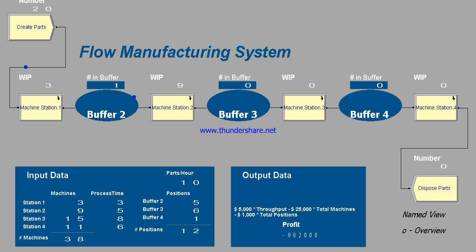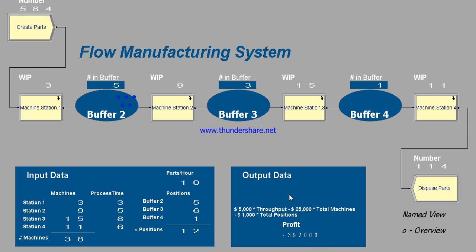If I increase the speed of the program, we can see the buffer at its maximum of five, and six here — currently zero and one as amount done. Looking at the output data, it is currently negative, meaning we have not produced enough — there are more expenses than revenue. Now it has moved to positive, so we start gaining money.